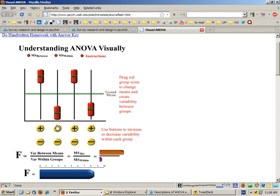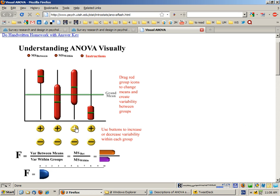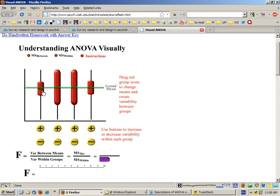If you wanted to maximize the F score you would have the means as far apart as possible and you would have the within group variance as small as possible. To minimize the F you would increase the variance within a group. The other thing you could do is make the means equal and if the means are equal there will be a zero F score.